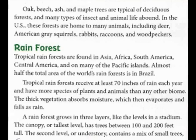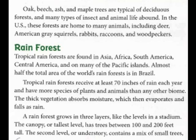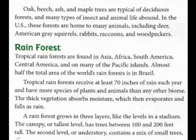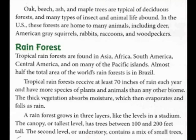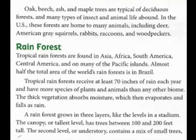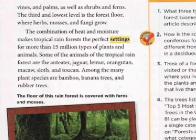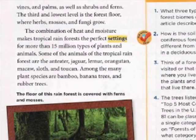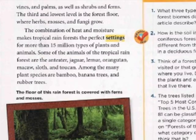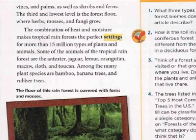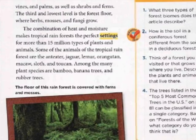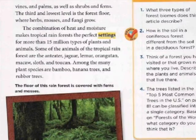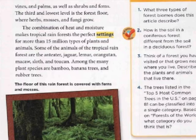A rainforest grows in three layers, like the levels in a stadium. The canopy, or tallest layer, has trees between 100 and 200 feet tall. The second level, or understory, contains a mix of small trees, vines and palms, as well as shrubs and ferns. The third and lowest level is the forest floor, where herbs, mosses, and fungi grow. The combination of heat and moisture makes tropical rainforests the perfect setting for more than 15 million types of plants and animals.